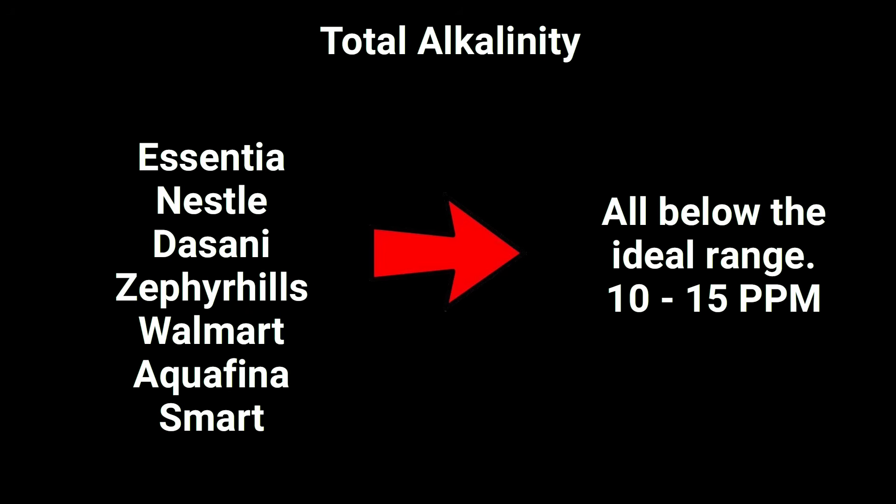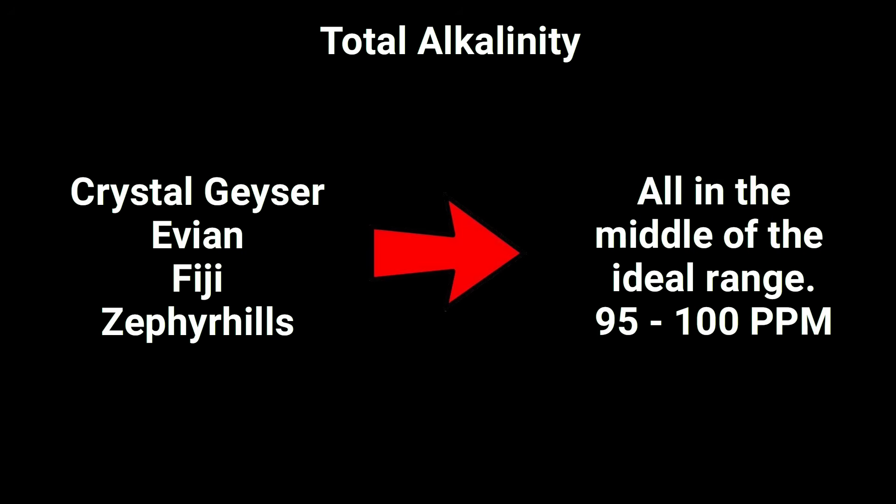For people who like to drink alkaline water, Essentia, Nestle, Dizani, Zephyr Hills, Walmart, Aquafina, and Smart came in very low, below the testing range, 10 to 15 parts per million. Crystal Geyser, Evian, Fiji, and Zephyr Hills all came in in the middle of the ideal range, between 95 and 100 parts per million.